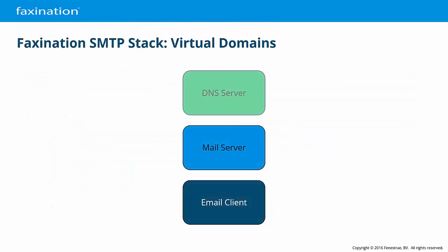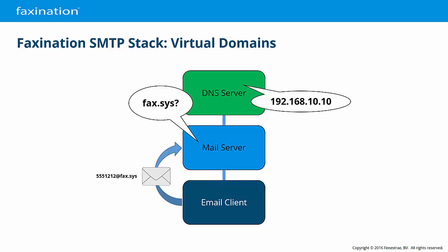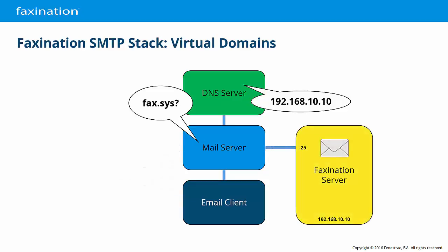The SMTP stack is typically used in conjunction with the configuration of one or more virtual domains. An email client submits a Faxonation message to their mail server with a virtual domain as part of the email address. The mail server then performs a DNS query to determine the IP address of the virtual domain, and DNS responds with the IP address of the Faxonation server. The mail server then makes an SMTP connection to that IP address, where the Faxonation SMTP stack is listening on port 25 by default.